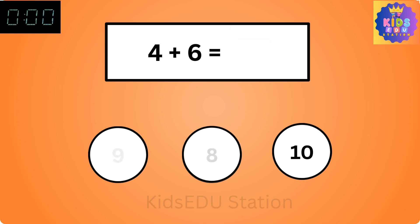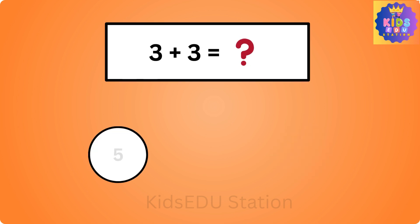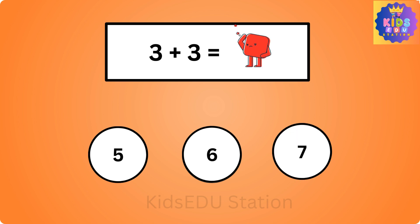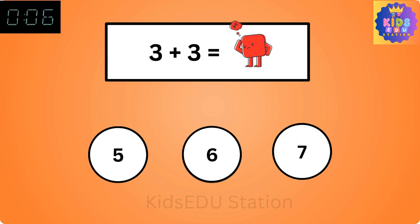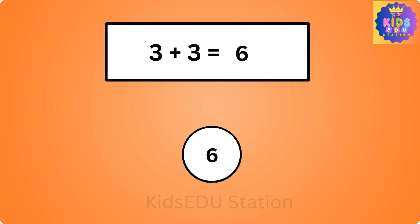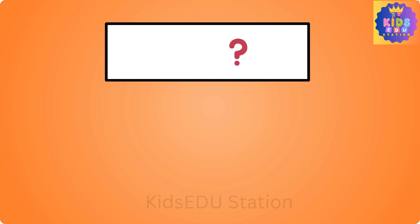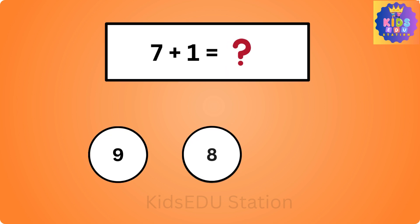4 plus 6 is 10. What is 3 plus 3? 5, 6, 7. 3 plus 3 is 6. What is 7 plus 1? 9, 8, 10.